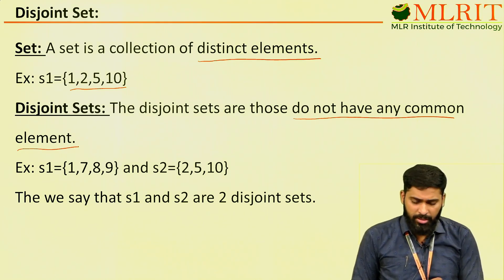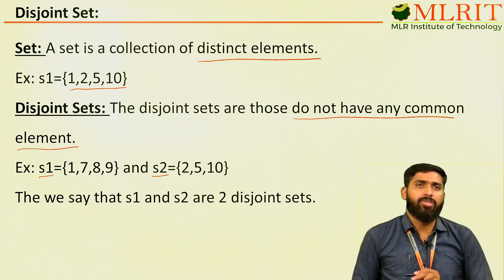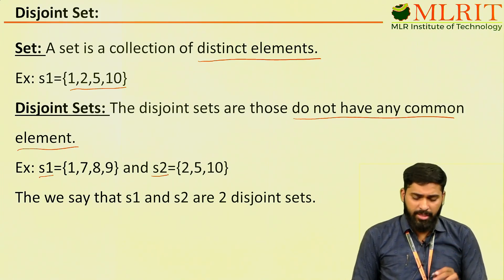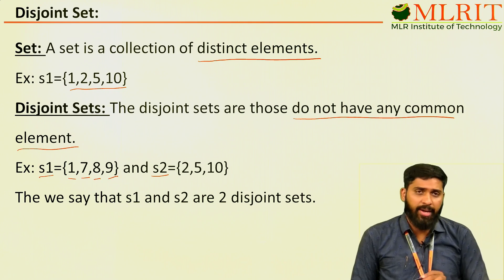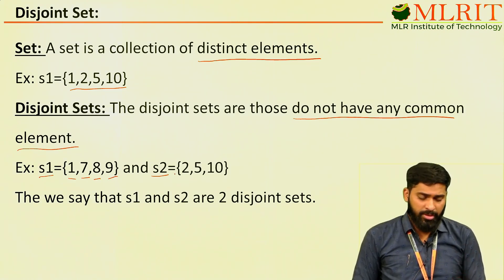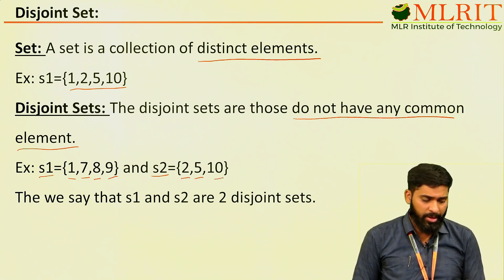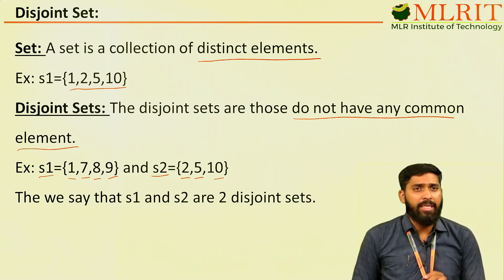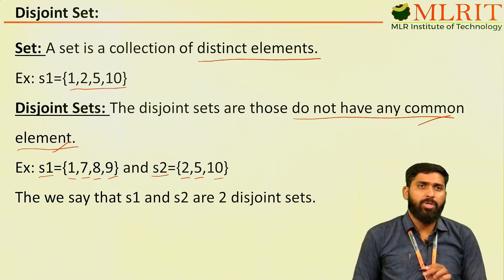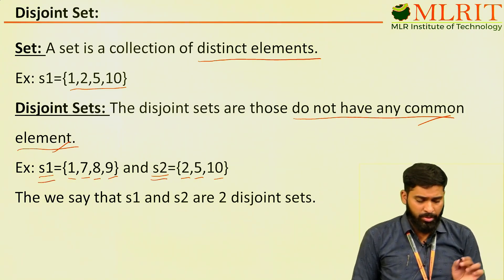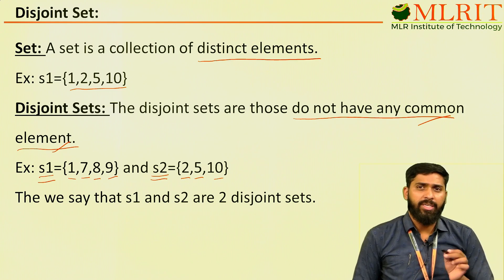If you observe, this is set S1 and this is set S2. S1 contains elements 1, 7, 8, 9. S2 contains 2, 5, 10. Now, you observe that in these two sets there is no common element. So, we call S1 and S2 are disjoint sets.